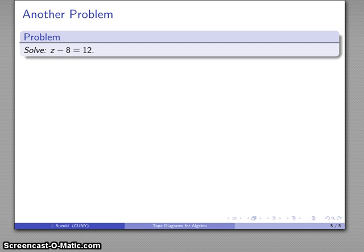How about that third problem? z minus 8 equals 12. And again, we can represent our equation using two tapes of equal length.